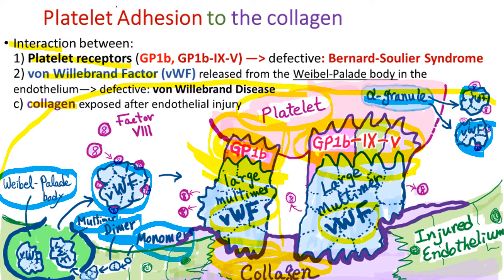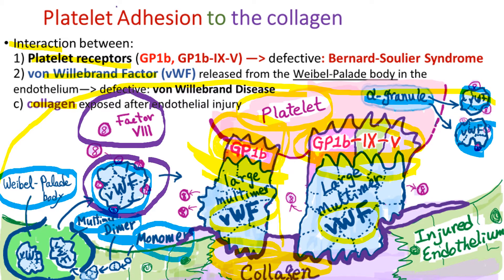These are synthesized in the megakaryocyte in the bone marrow, but the main source of von Willebrand factors is from the endothelium. Another important function of von Willebrand factor, other than functioning as a glue for platelet adhesion to collagen, is to protect coagulation factor VIII. Factor VIII molecules are fragile and are destroyed easily in the blood when they circulate alone, so circulating factor VIII is protected by binding to von Willebrand factor.